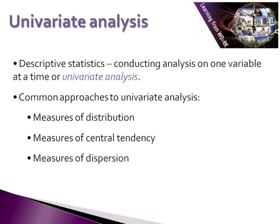When using descriptive statistics, we are usually conducting what we call univariate analysis. Univariate analysis is the analysis of one variable at a time, describing the characteristics of each variable. When we conduct univariate analysis, there are a number of different common approaches that we tend to use. The first is looking at measures of distribution, the second is measures of central tendency, and the third is measures of dispersion.